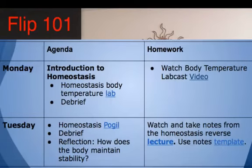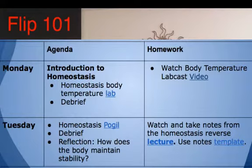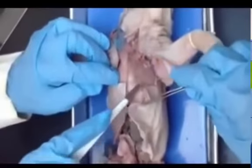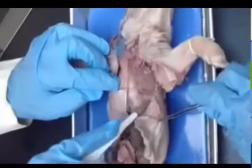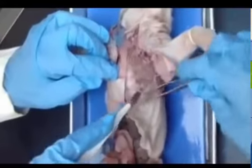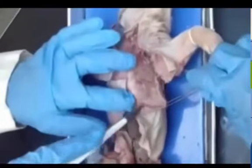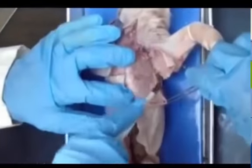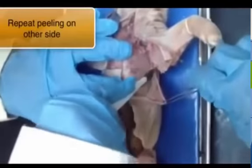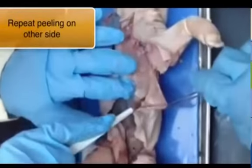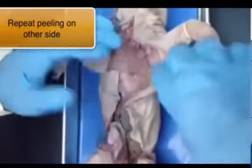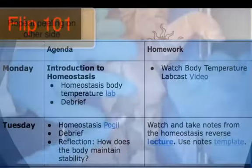For example, notice that for homework it's just to watch a lab cast video. Lab cast videos are basically videos where a teacher explains the lab, so it's sort of like a pre-lab exercise, meaning students came prepared for lab.